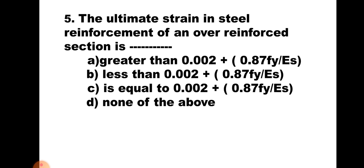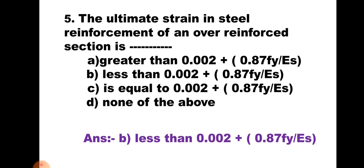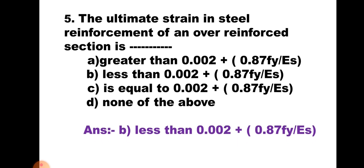Question number 5: The ultimate strain in steel reinforcement of an over-reinforced section is: A. Greater than 0.002 + 0.87FY/ES, B. Less than 0.002 + 0.87FY/ES, C. Equal to 0.002 + 0.87FY/ES, D. None of the above. For an over-reinforced section, concrete reaches its ultimate strain first, so the strain in steel is less than 0.002 + 0.87FY/ES. The collapse is sudden without giving any intimation. The correct answer is B.